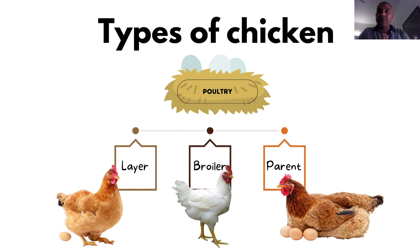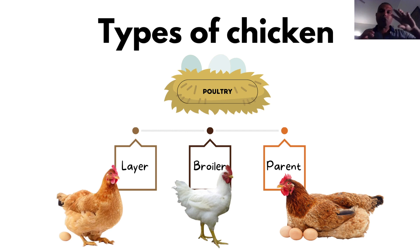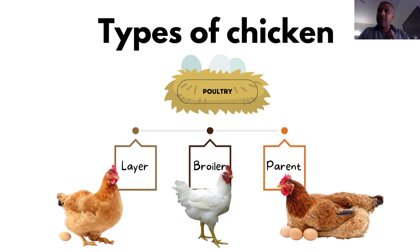For layers, artificial lighting is very often used because increasing the amount of light the chicken is exposed to increases the frequency with which they lay eggs. Broilers are chickens kept only for their meat. Before they reach complete maturity they are normally taken to slaughter.